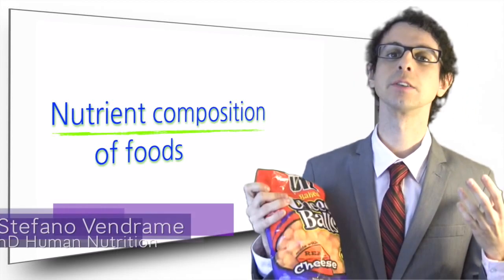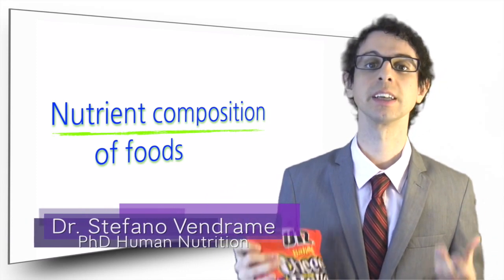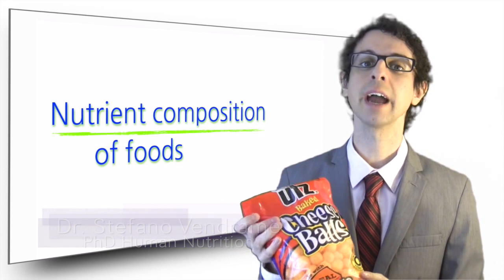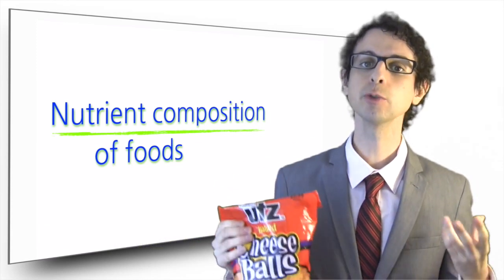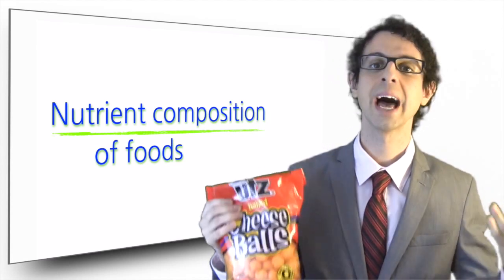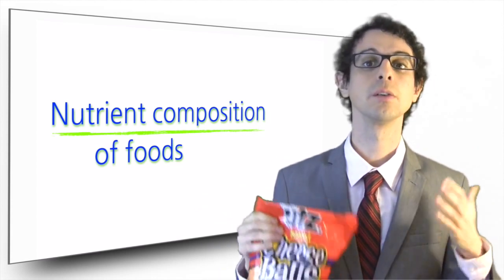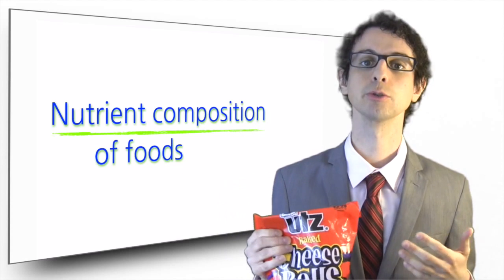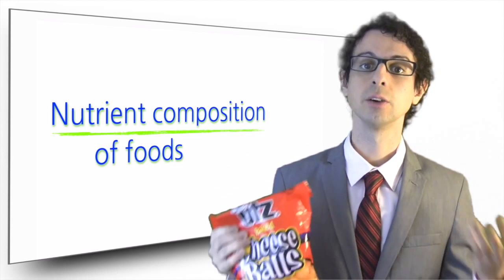To help us understand the content of energy and macronutrients, as well as some micronutrients, in the food we eat, the label of every packaged food has to carry a standardized nutrition facts panel. For fresh produce and other foods that do not come prepackaged, such as bananas or chicken breast, we can refer to food composition tables — for example, the United States Department of Agriculture's National Nutrient Database for standard reference, which is available online, free of charge.